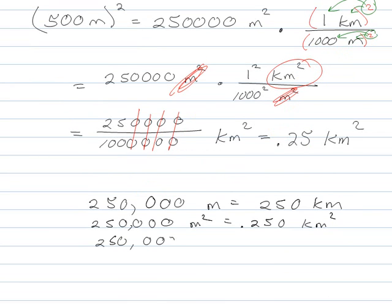250,000 cubic meters would be 0.00025 cubic kilometers. And again, it's because if there's a thousand meters in one kilometer.